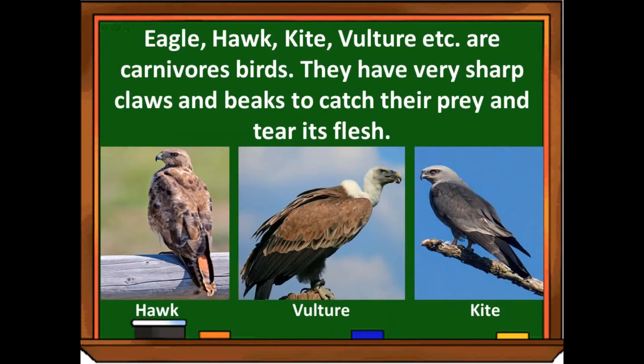Eagle, hawk, kite, vulture — these are carnivore birds. They have very sharp claws and beaks to catch their prey and tear its flesh. Their sharp claws and beaks are used to grip their prey and tear the flesh.